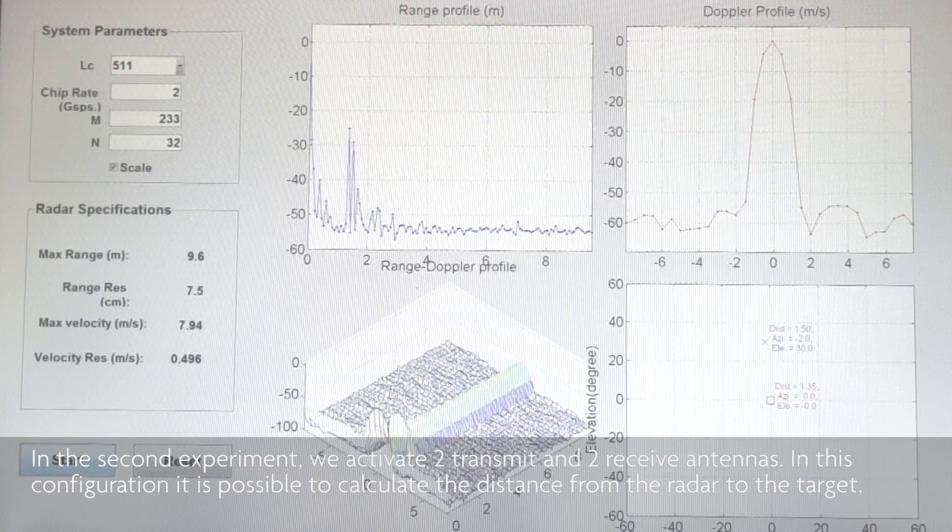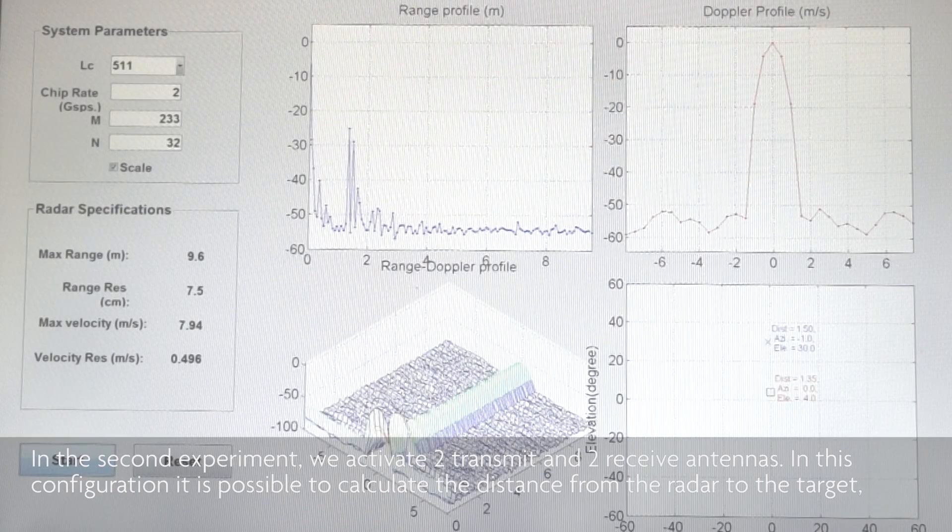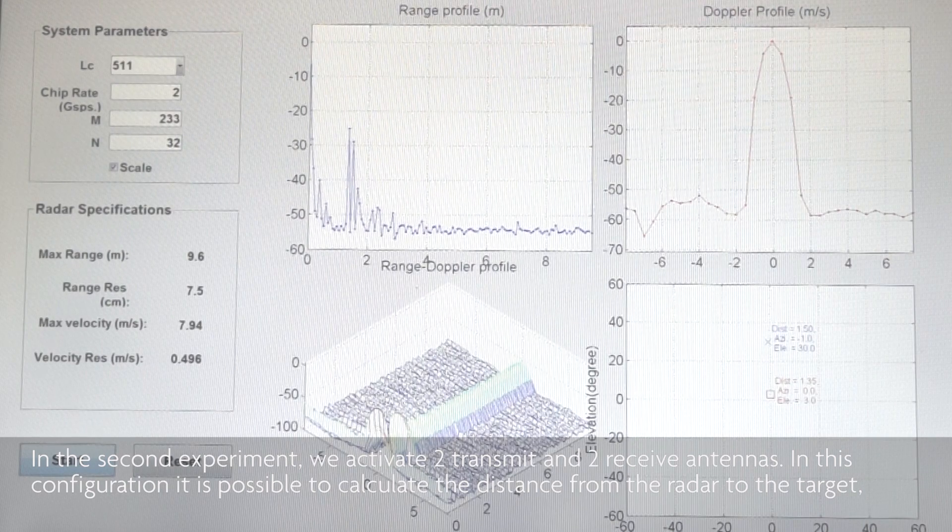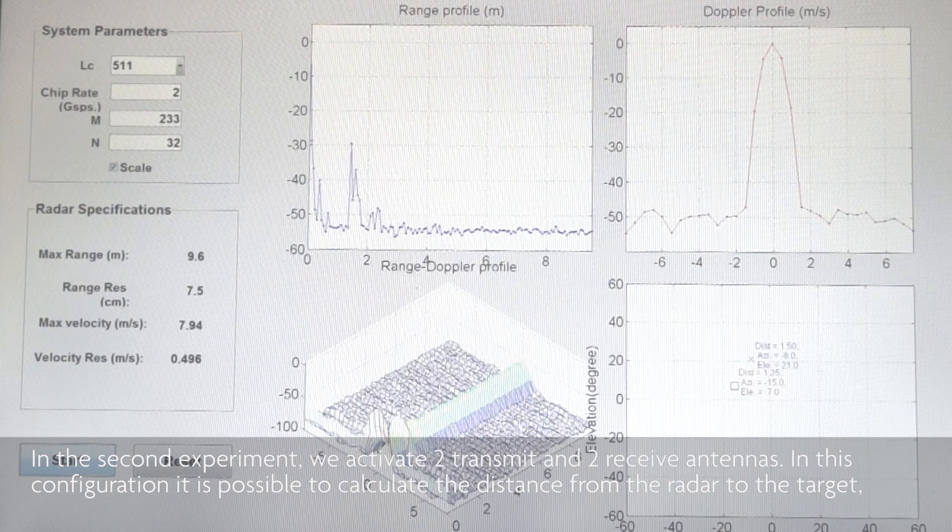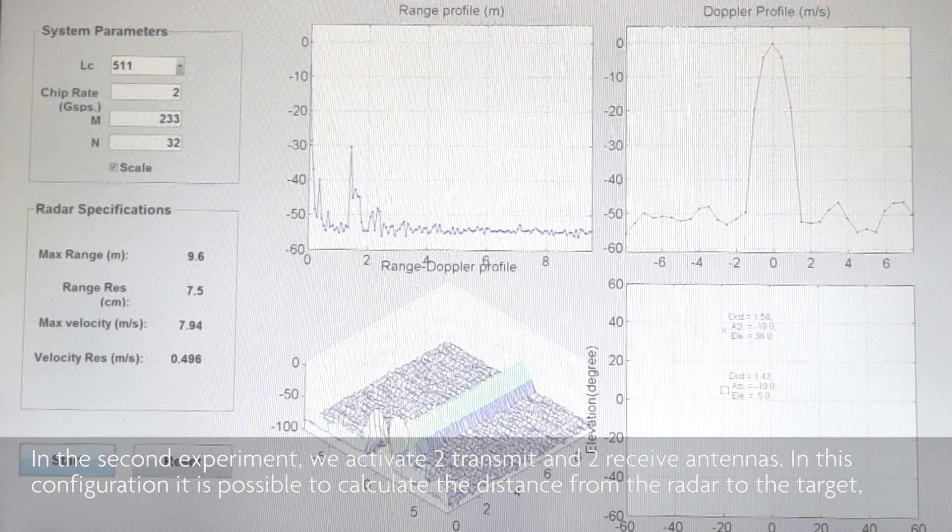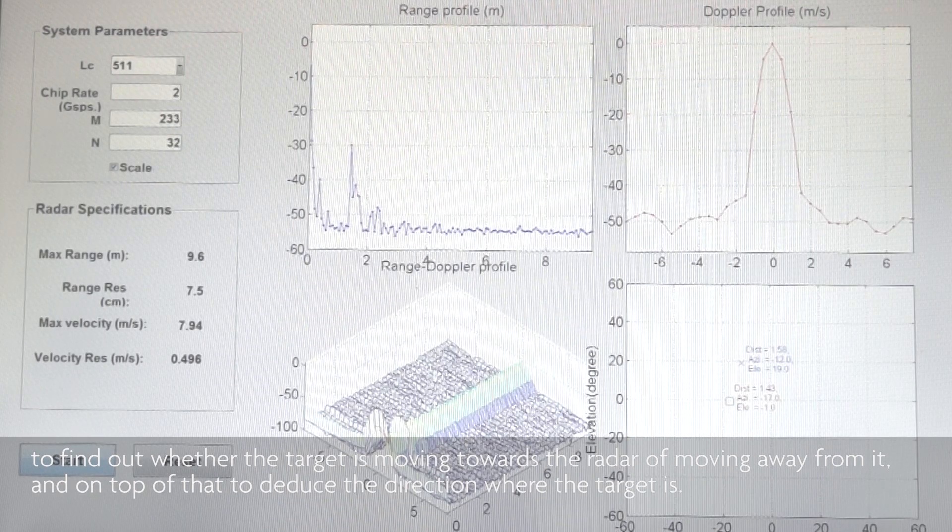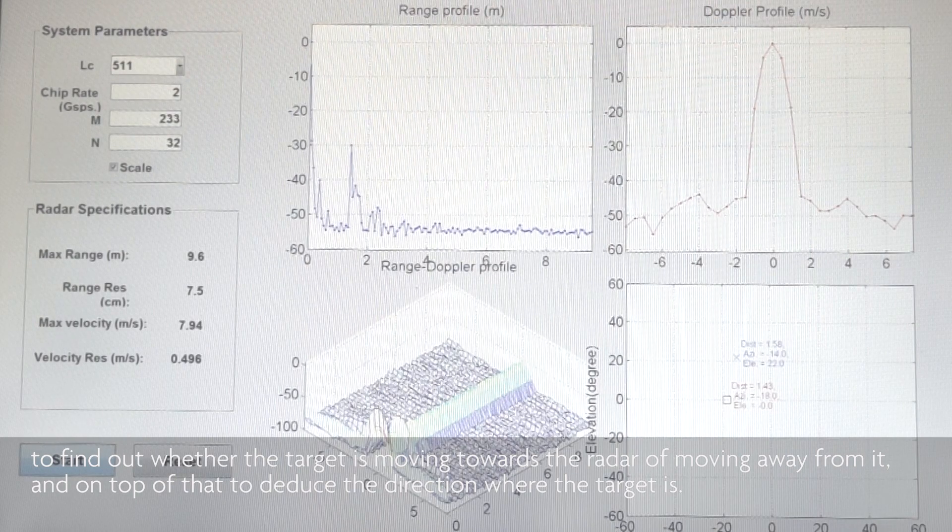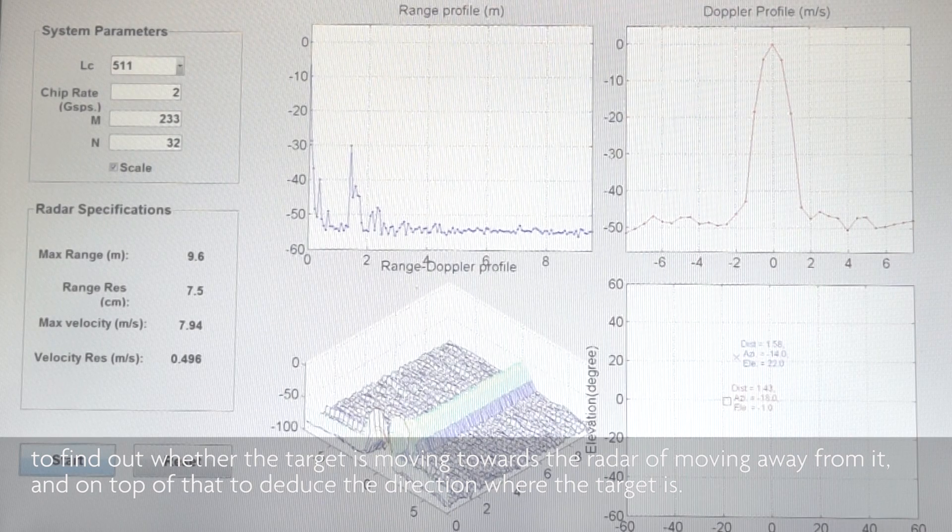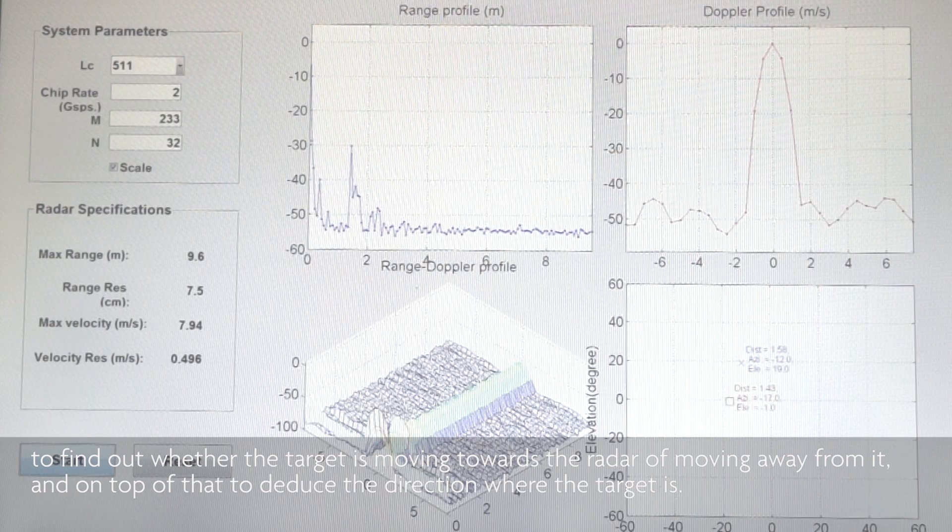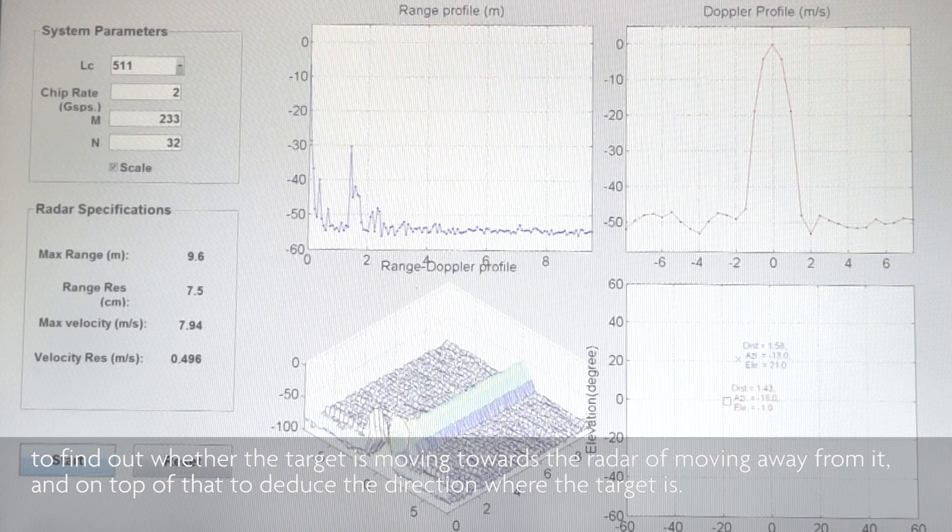In the second experiment, we activate two transmit and two receive antennas. In this configuration, it's possible to calculate the distance from the radar to the target, to find out whether the target is moving towards the radar instead of moving away from it, and on top of that, to deduce the direction where the target is.